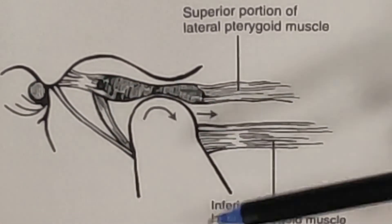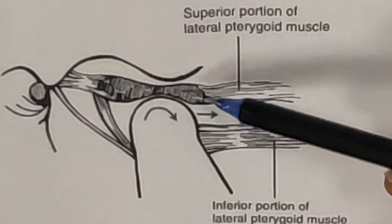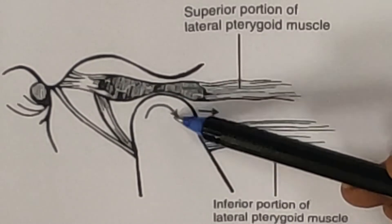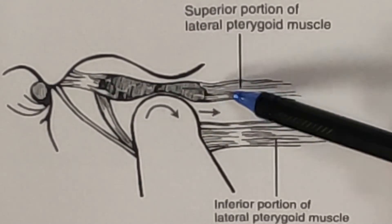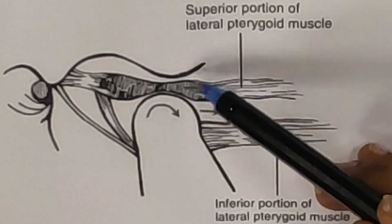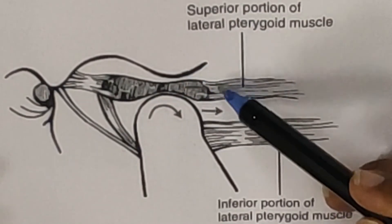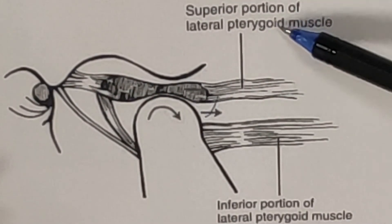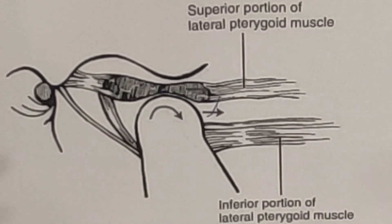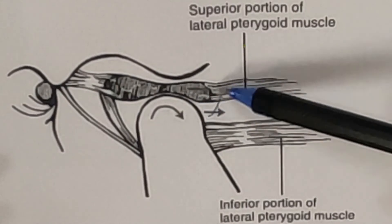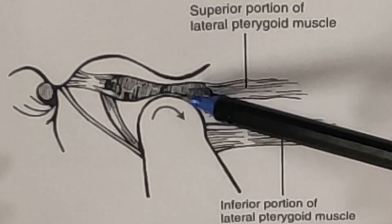There are two important sets of structures attached to the disc. Looking at the anterior attachments: the disc anteriorly is attached to the joint capsule and also to the superior and inferior portions of the lateral pterygoid muscle. Because these structures are attached anteriorly, they check excessive posterior migration of the disc.